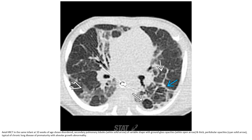Let's see the CT. This is the CT of the same patient, a former premature infant at 10 weeks of age, showing large secondary pulmonary lobules of variable shape with ground-glass opacity, and varying lobular opacity typical of alveolar growth abnormality.